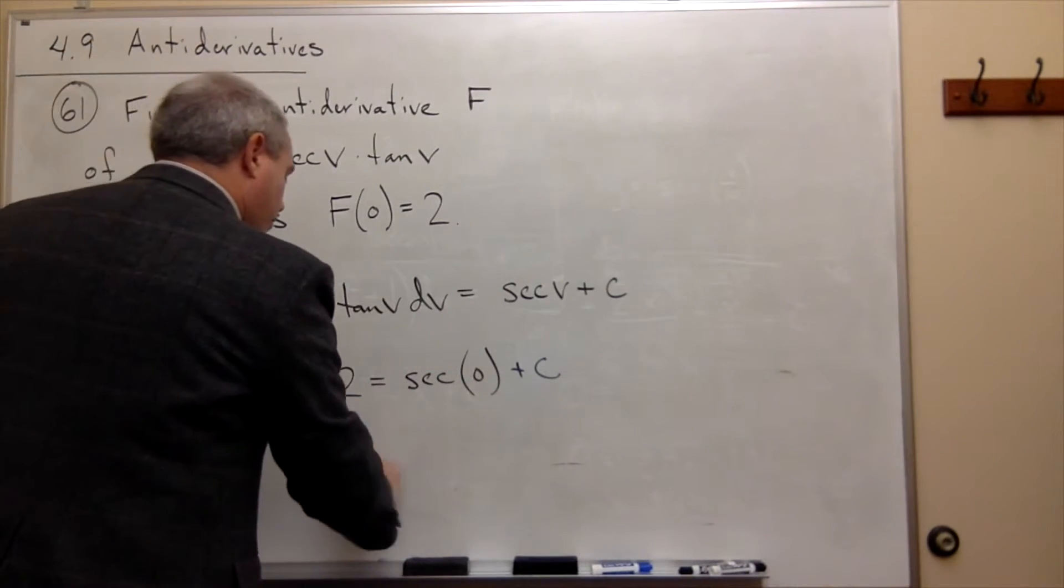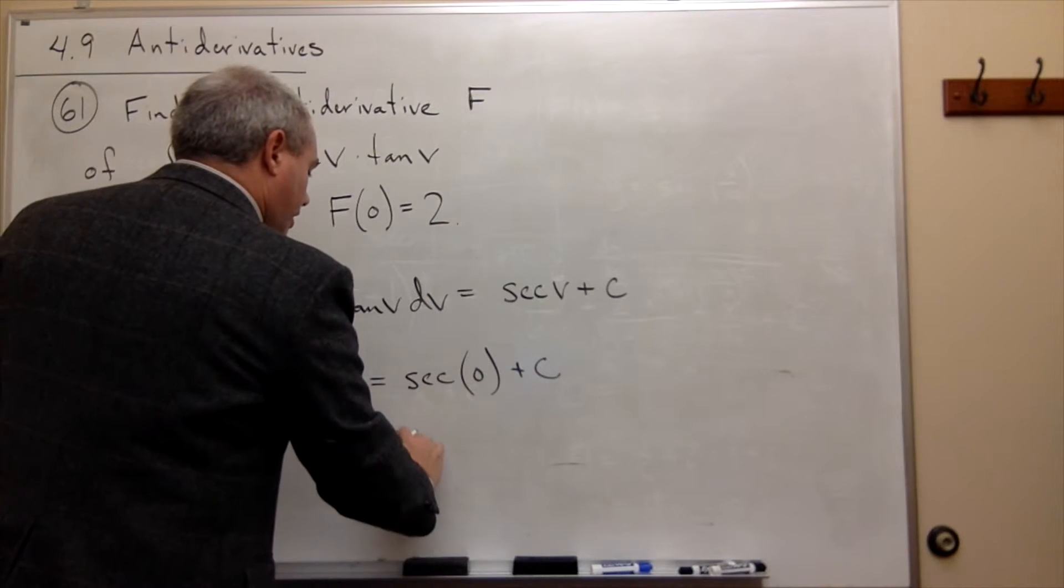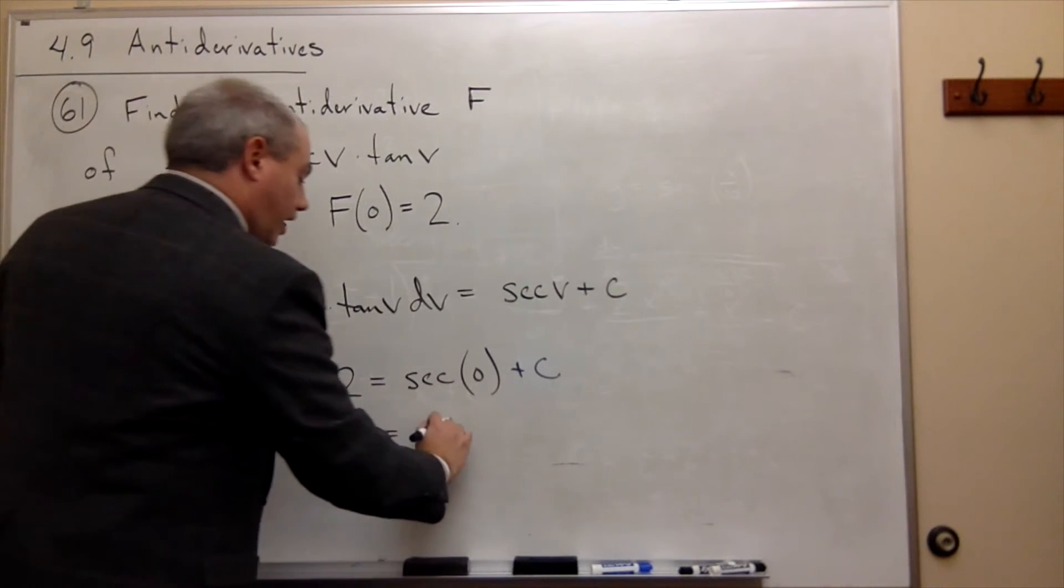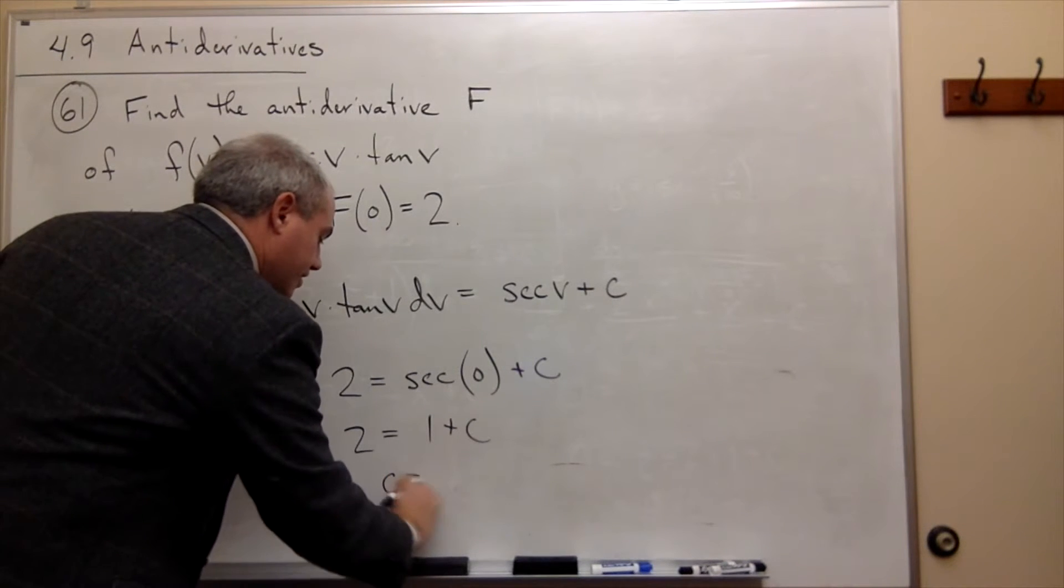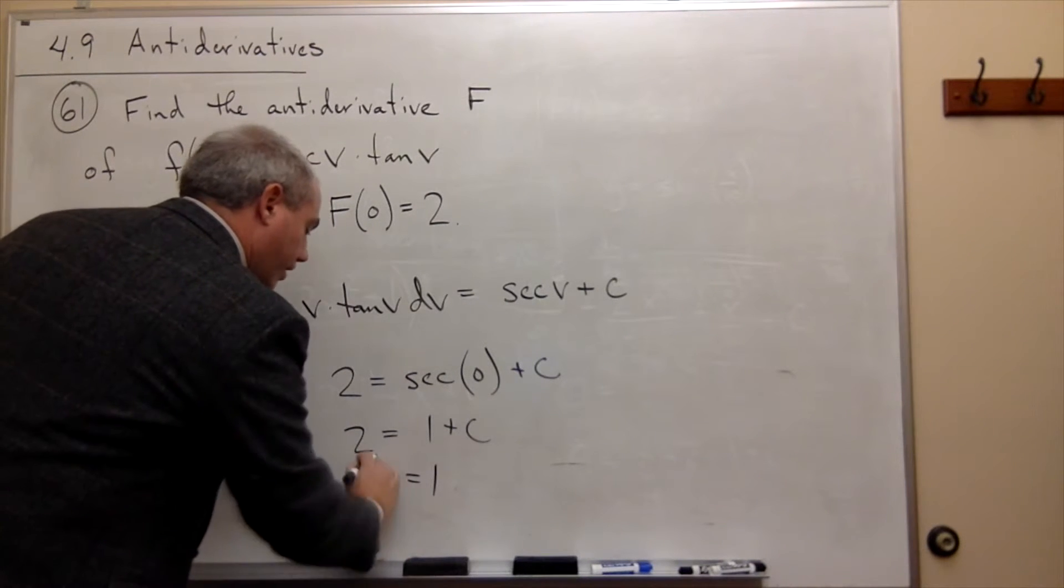So we get that 2 = 1 + C. Solving for C, we have C = 1.